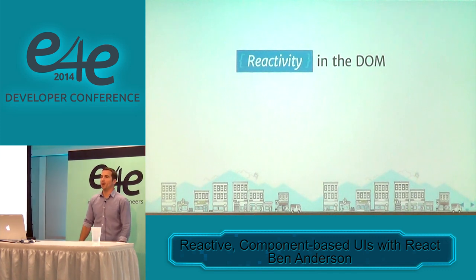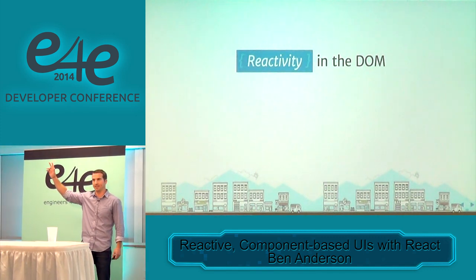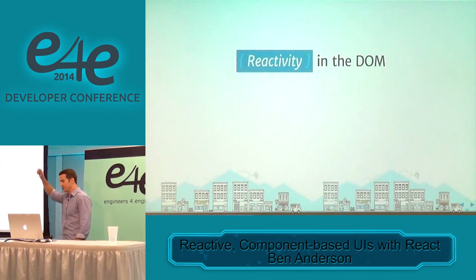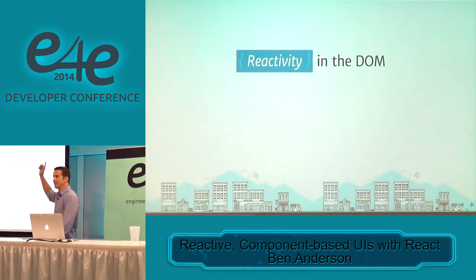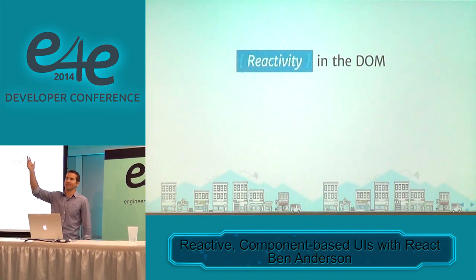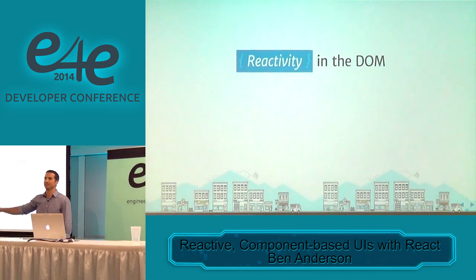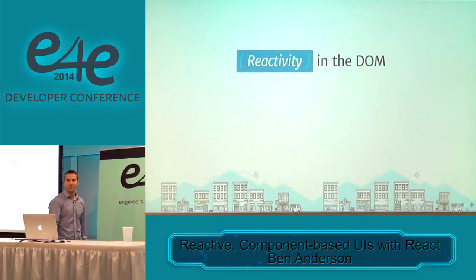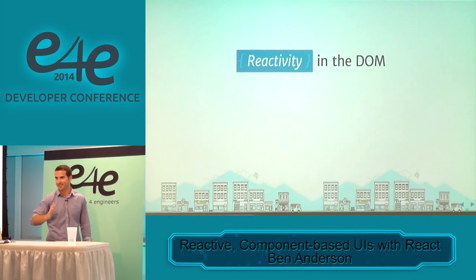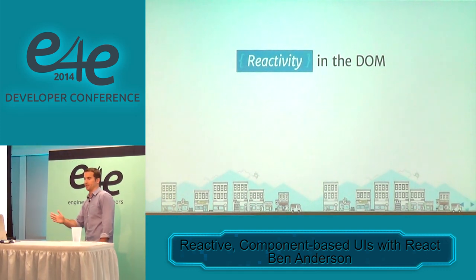Let's talk about reactivity in the DOM. There are at least three different types of state in our applications: there's state on the server, state in your client-side models, and a third state — we don't even think about the DOM as stateful, but it is. It's the definition of stateful. We've got to keep not only two, but all three of those things in sync, and that's where this really becomes a problem.